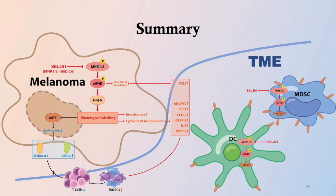So far, we have shown that Phospho-EIF4E in melanoma cells promotes their phenotype switching, with decreased expressions of melanocytic antigens, decreased infiltration of T cells, and increased infiltration of MDSCs. In addition, Phospho-EIF4E expression in dendritic cells and MDSCs regulates their PD-L1 expression, which makes the tumor microenvironment more immunosuppressive. All these features are associated with poor responses to immunotherapies such as PD-L1 blockade.